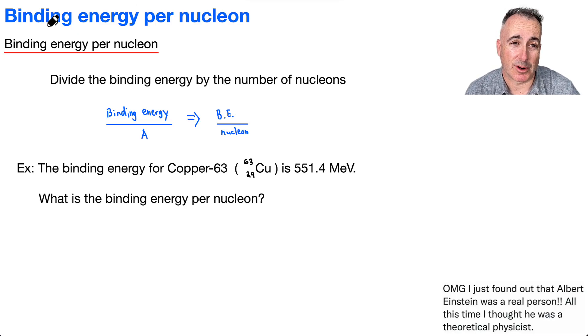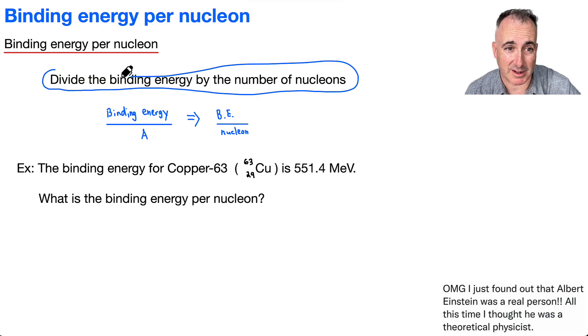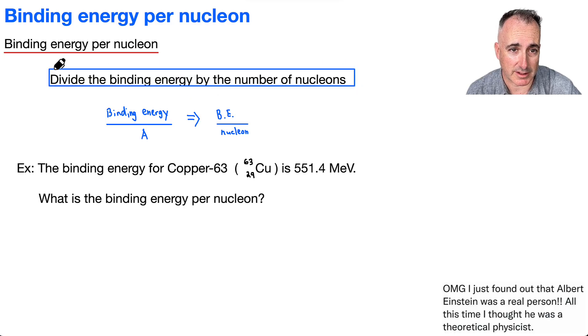We're going to learn about binding energy per nucleon. And good news, the definition is actually quite straightforward. What do you do? Well, you take the binding energy and you divide it by the number of nucleons.